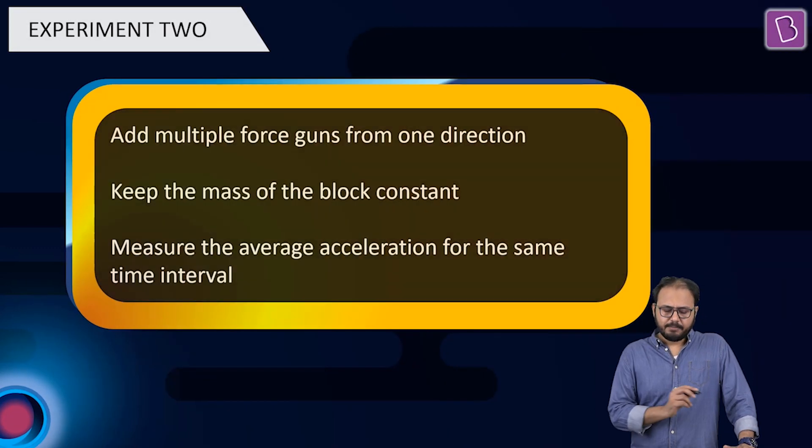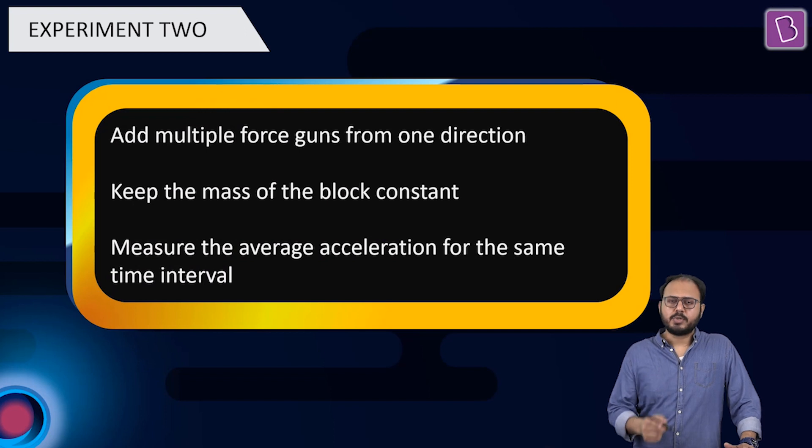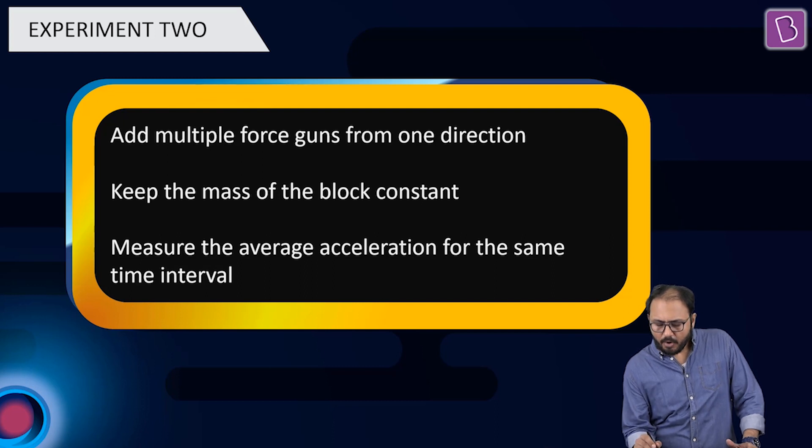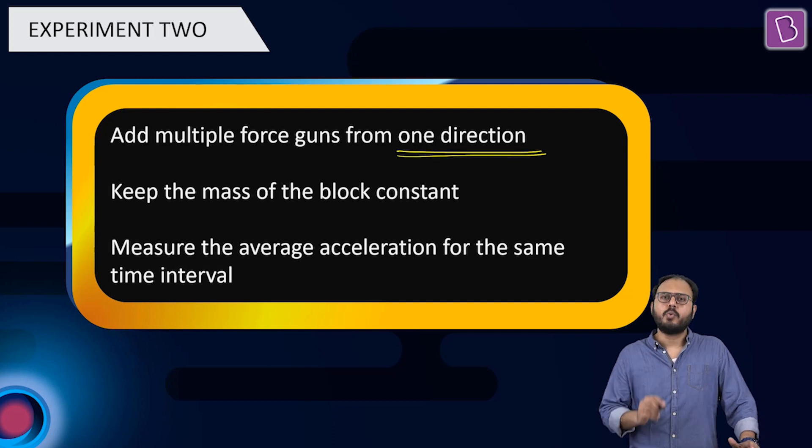Experiment number two. This time, we add multiple force guns. I said one force gun gives one force. How about we have multiple forces? We again keep the mass of the block constant, guys. And make sure we apply all the forces from one direction only. Previously, there were forces which was varying. But this time, one direction, multiple forces. Last time, f, 2f, 3f, the same force. This time, multiple forces.